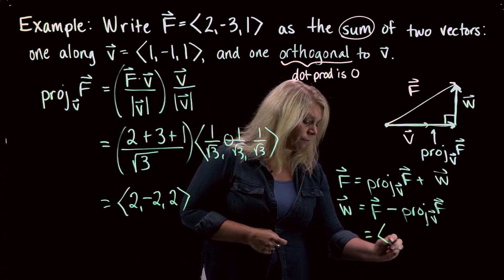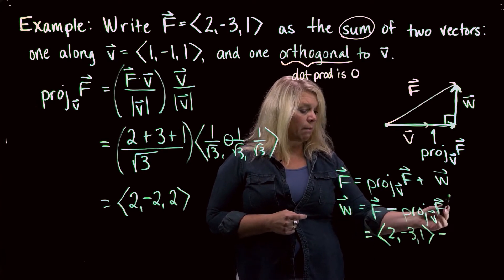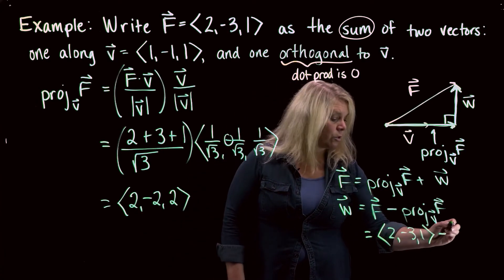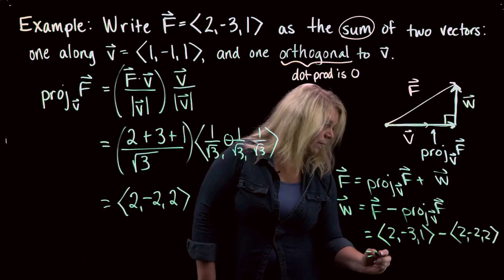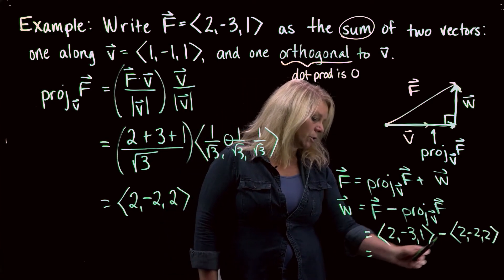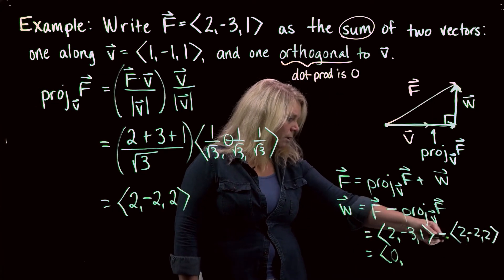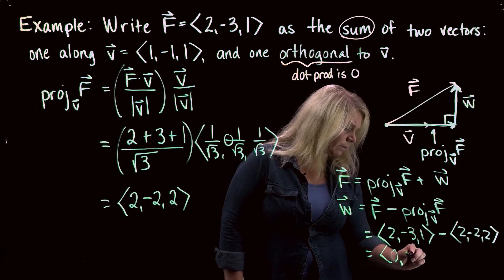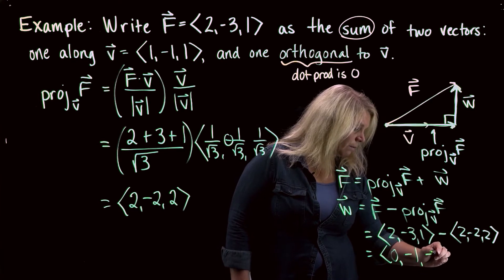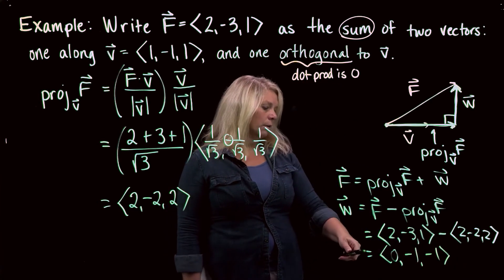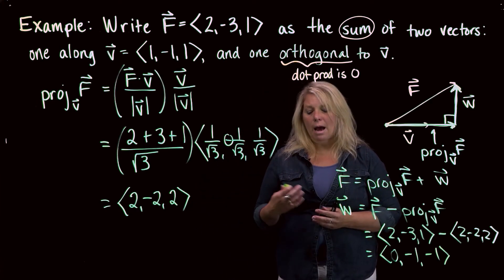I already have F and the projection of F onto V, so I just subtract: F = (2, −3, 1) minus the projection (2, −2, 2). First component: 2 − 2 = 0. Second component: −3 − (−2) = −3 + 2 = −1. Be careful with the minus-negative there. Third component: 1 − 2 = −1. So the vector w is (0, −1, −1).